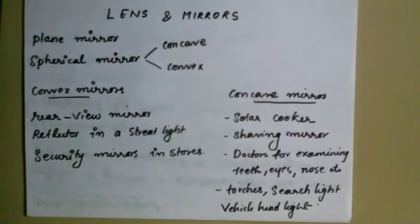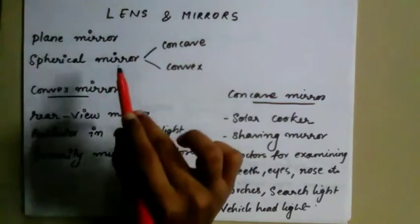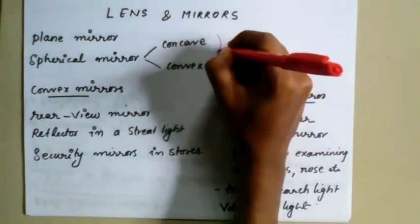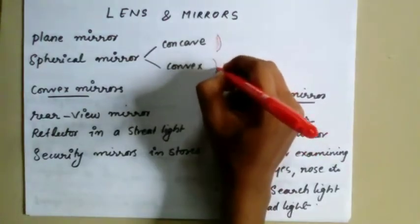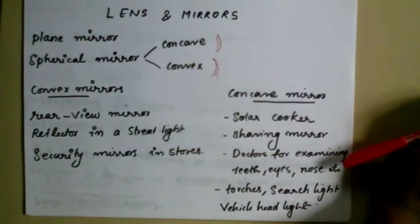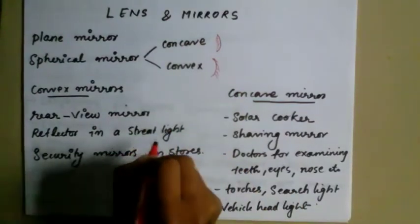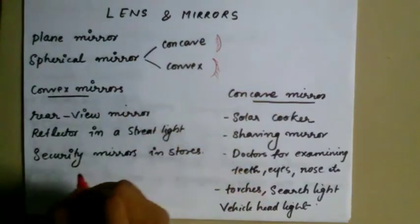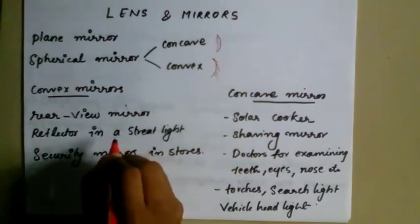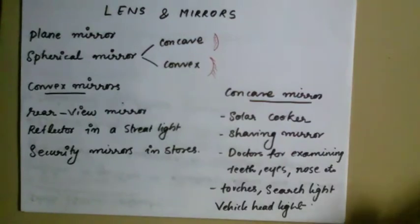Now let's look at lenses and mirrors. There are two types of mirrors: plane mirrors and spherical mirrors. Spherical mirrors include concave and convex mirrors. Convex mirrors are used in street lights and as rear-view mirrors in vehicles.